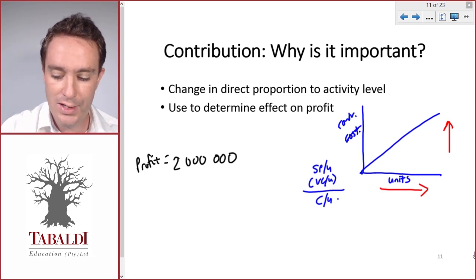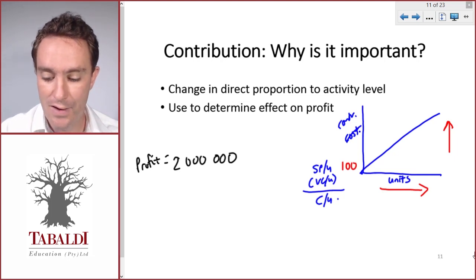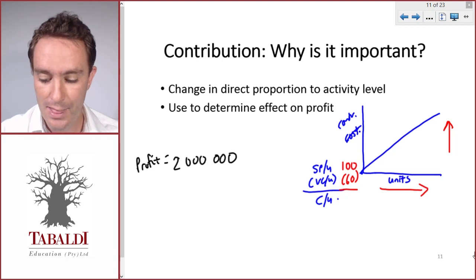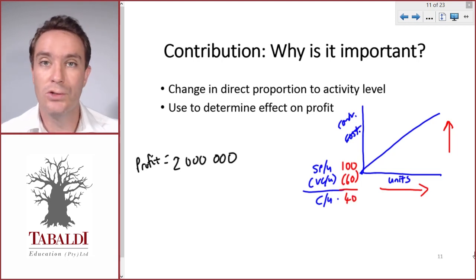If the selling price per unit is 100 and our variable cost per unit is 40, that means our contribution per unit is 40.